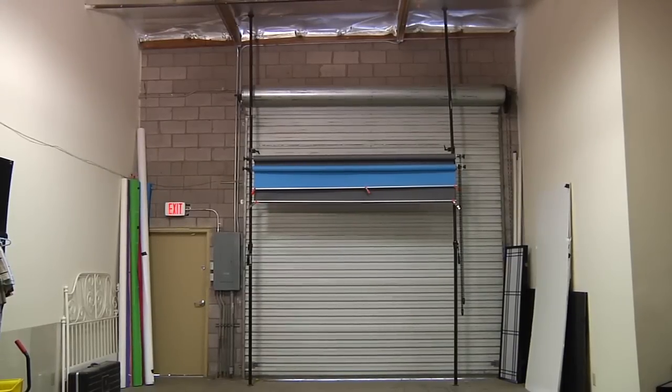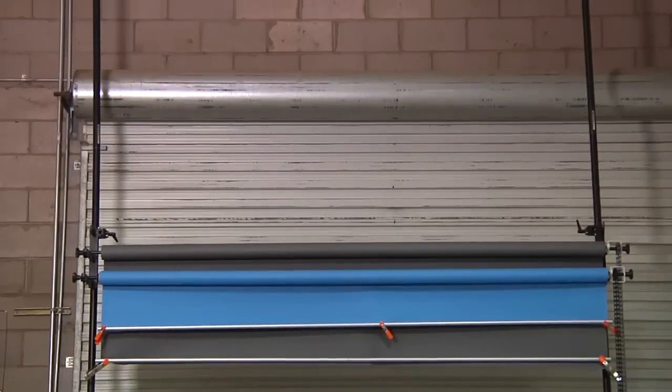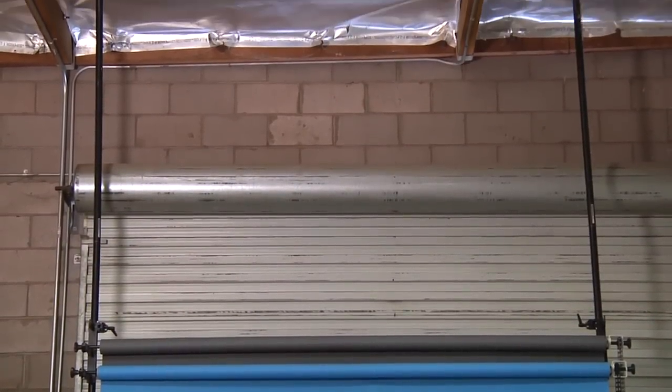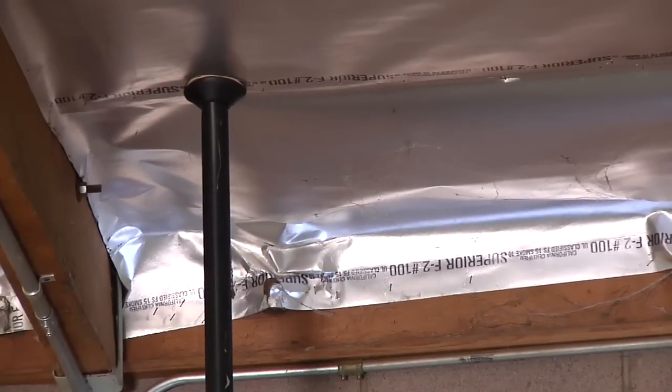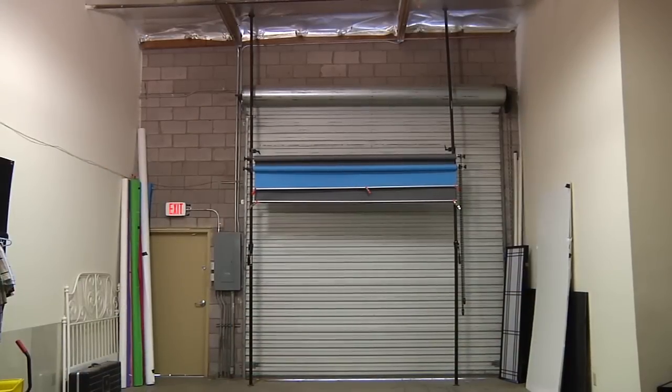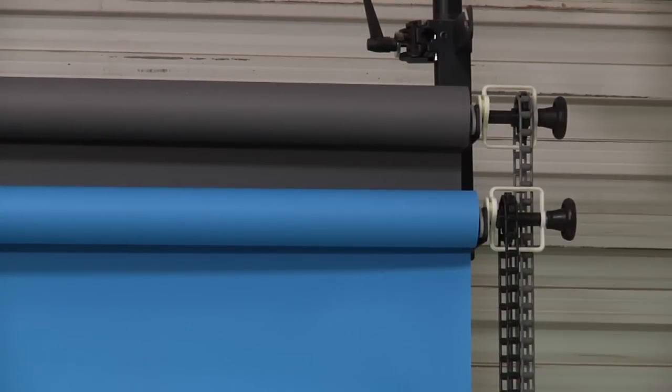So our studio has very tall ceilings. They're 16 feet. And so we actually have the extensions on the end of our auto poles. And you can see that they're really snug against the studs in the ceiling and our concrete floor. And then we've added our X-Pan system with our super clamps.